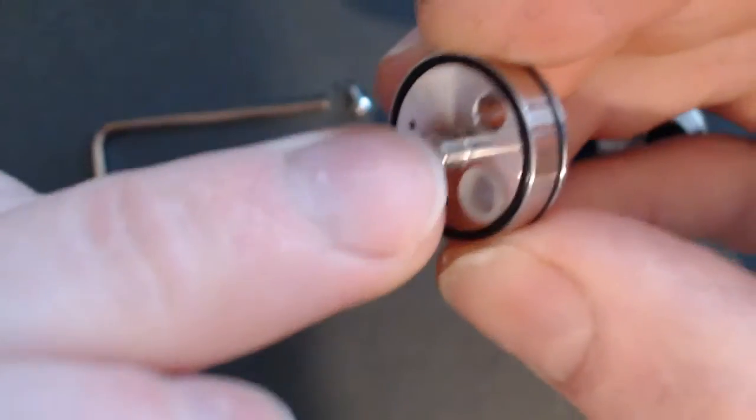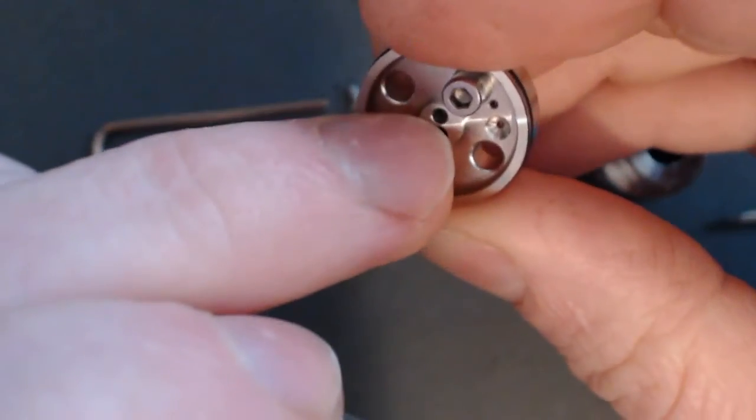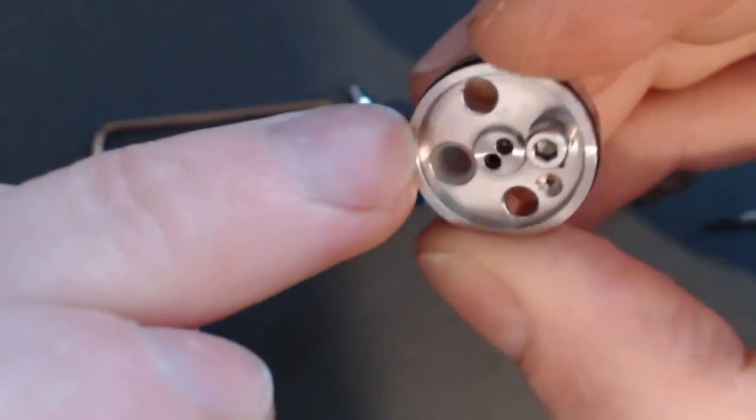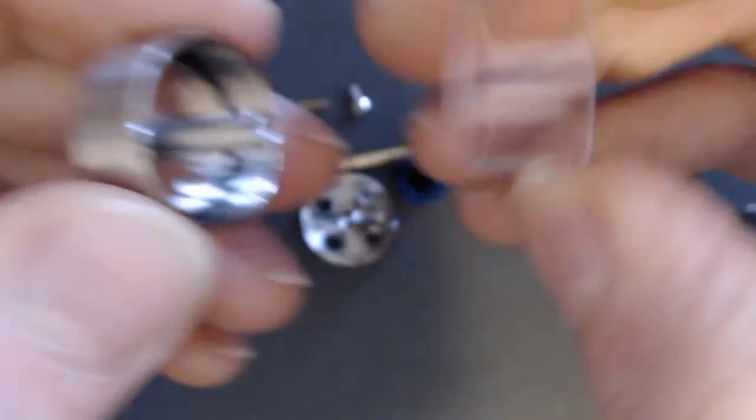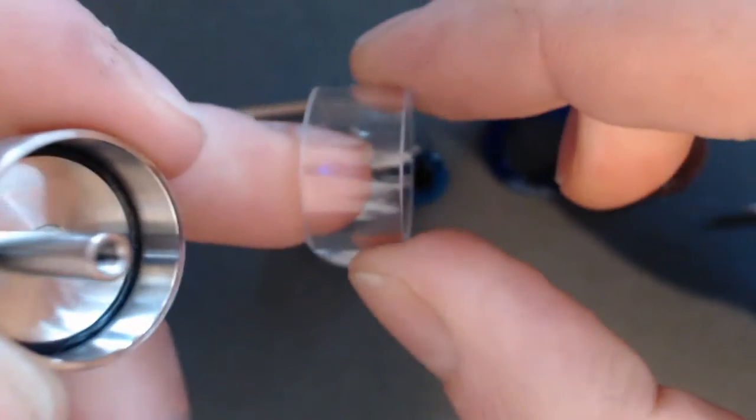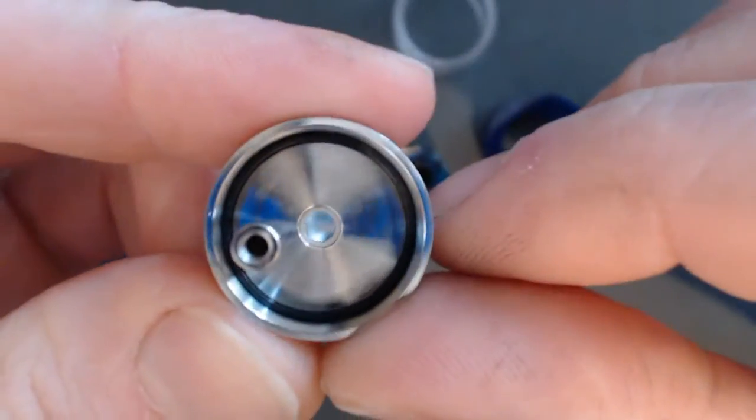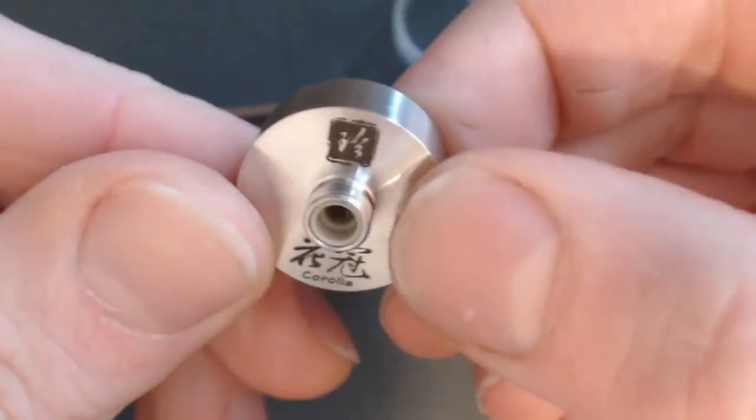And then we can just pull off the top section there. So you see that negative post there goes through the top section via this insulator to insulate it, and the positive connection obviously goes through the brass screw all the way up the top and screws in here. That does mean that this whole top section is your positive.